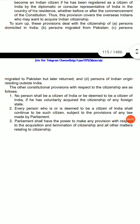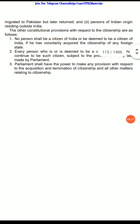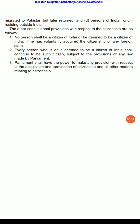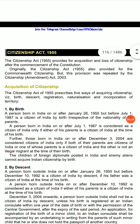The other constitutional provisions with respect to citizenship are as follows: no person shall be a citizen of India or deemed to be a citizen of India if he has voluntarily acquired the citizenship of any foreign state. Every person who is or is deemed to be a citizen of India shall continue to be such a citizen subject to the provisions of any law made by Parliament. Parliament shall have the power to make any provision with respect to the acquisition and termination of citizenship and all other matters relating to citizenship.